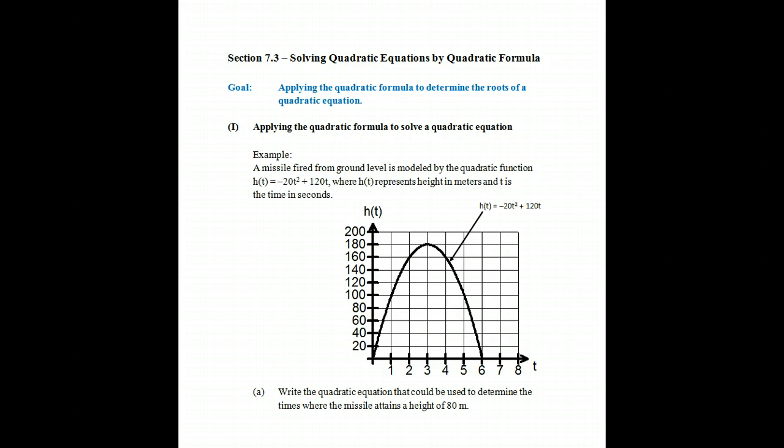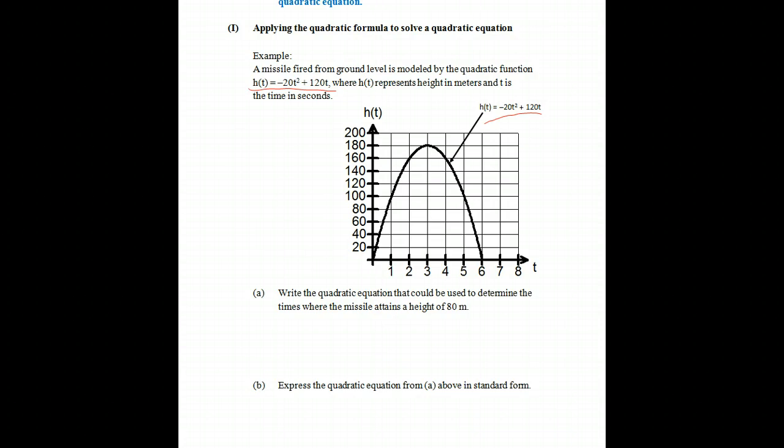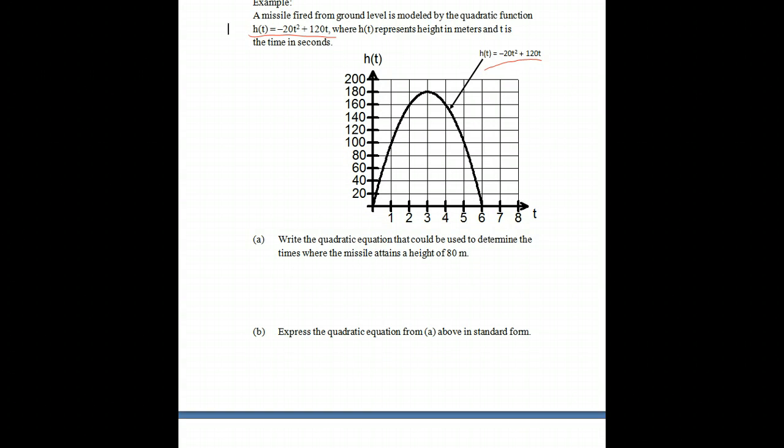So the first example, this is apply the quadratic formula to solve a quadratic equation. A missile is fired from ground level, and it's modeled by the quadratic function, and we'll see that here, where h(t) represents height in meters and t is time in seconds. So write the quadratic equation to be used to determine the times where the missile obtains a height of 80 meters.